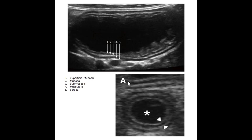Looking more closely at the layers of the intestinal tract by ultrasound, if conditions are good, we can see them fairly well. Looking at an example with some fluid within the intestinal tract: the superficial portion of the mucosal layer looks a little more echogenic; the deeper part of the mucosal layer is hypoechoic; the submucosal area is hyperechoic; the muscularis is hypoechoic; and the serosa is hyperechoic again. So it's bright, dark, bright, dark, bright. If you remember the labels — SMSMS — the muscularis and mucosal layers are dark, and the other three are bright.